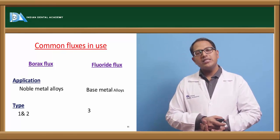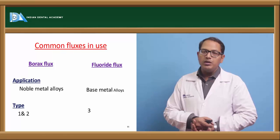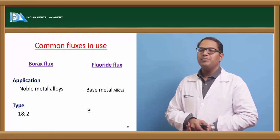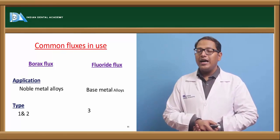Now borax flux, where is it used? It is used in noble metal alloy and it is of type 1 and 2. The fluoride flux is a base metal alloy which is used and it is of type 3.